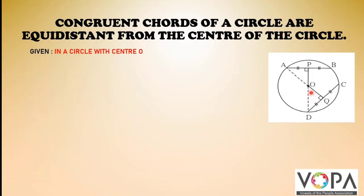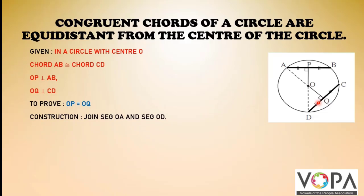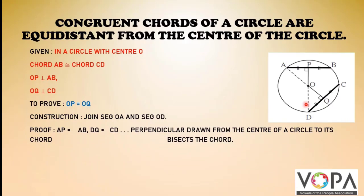Chord AB is congruent to chord CD. OP is perpendicular to AB and OQ is perpendicular to CD. We have to prove that OP is equal to OQ. Construction: join segment OA and OD.